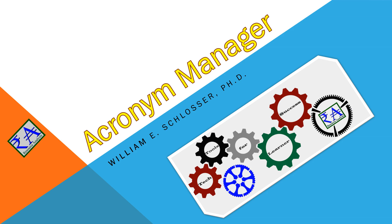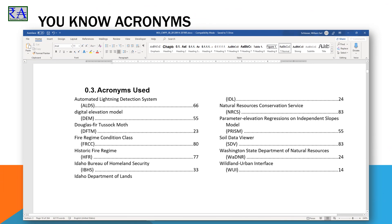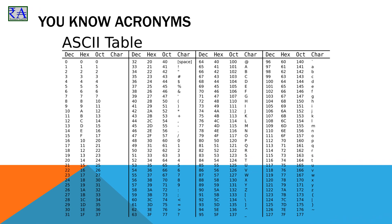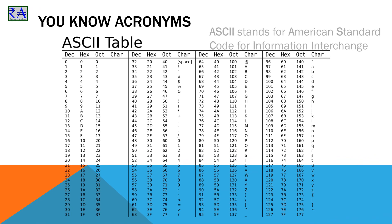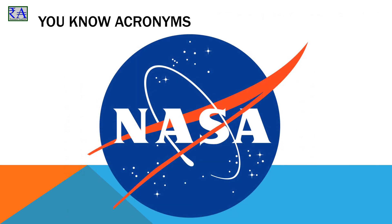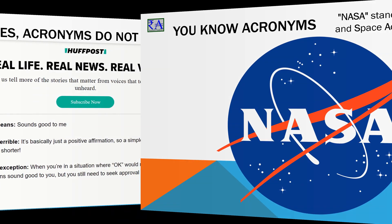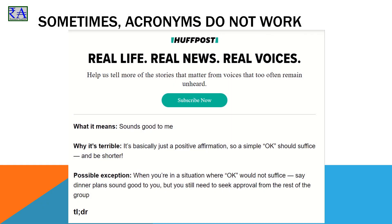If you are watching this video, then you have seen acronyms in written documents. Acronyms are an abbreviation formed from the initial letters of other words and are sometimes pronounced as a word, like ASCII or NASA. They are common document components. Sometimes they are presented nicely, and sometimes they miss the mark totally.